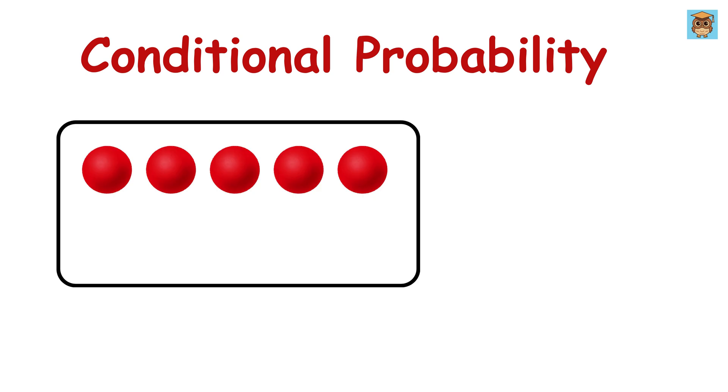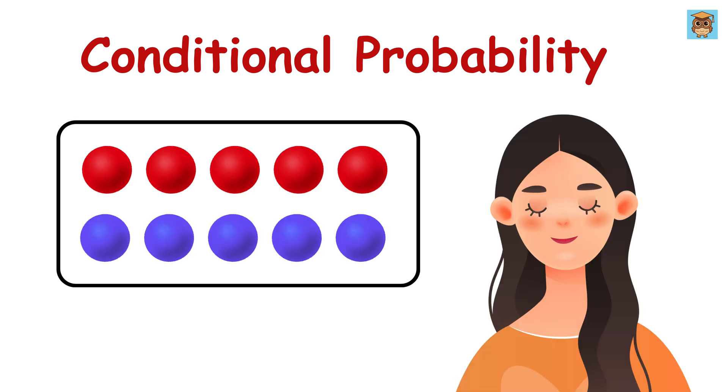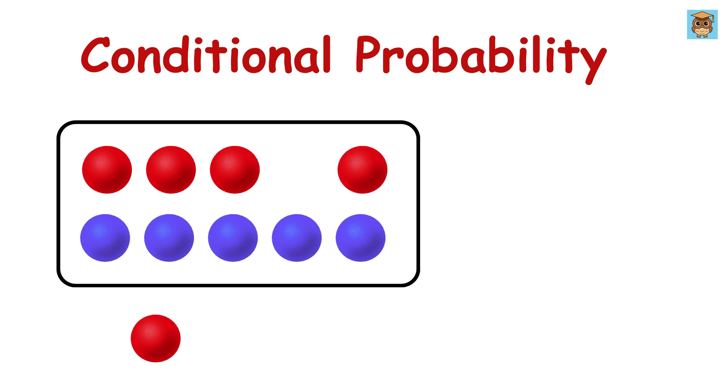Imagine you have a bag with five red balls and five blue balls. You close your eyes and pick one ball, and it turns out to be red. What was the probability of finding this red ball? Yes, it's simple. The answer is five out of ten, or one half, because we have five red balls and five blue balls, which means a total of ten balls.